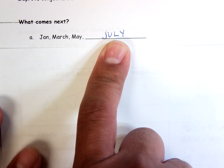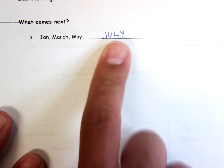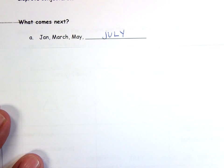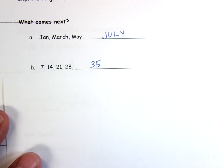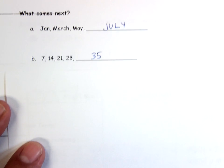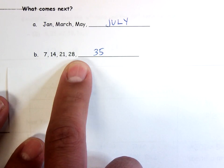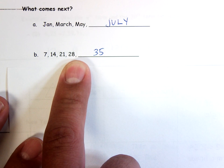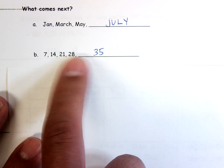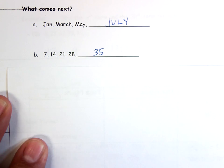What about the next one? Look in advance and see if you can figure out what the next number would be: 35, 7, 14, 21, 28. It looks like we've got multiples of 7, so we go up 7 and get to 35.